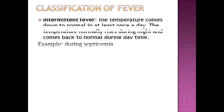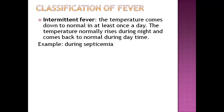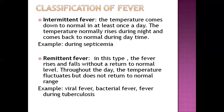Next is classification of fever. First is intermittent fever, normally seen during diseases like septicemia. In intermittent fever, temperature comes down to normal at least once a day, but rises again — typically rising during the night and returning to normal during daytime. Next is remittent fever, seen in viral fever, bacterial fever, or fever during tuberculosis. In remittent fever, the temperature rises and falls but does not return to normal like in intermittent fever — it fluctuates but never comes back to normal.